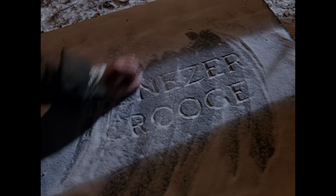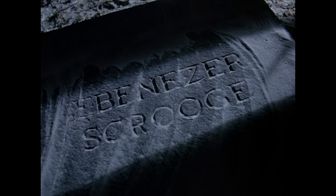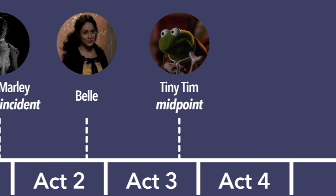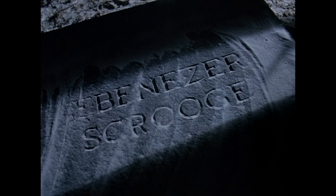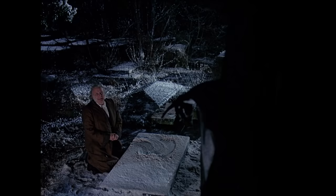Scrooge at first thinks that the ghost is using people's reactions to some other man's death as a kind of warning. But then the ghost takes him to see the grave of the dead man, and Scrooge realizes the truth. In previous acts, other characters confront him with his flaw. But in Act 4, at the crisis point, Scrooge is confronted by his own grave. The ghost has shown him a future in which he dies alone, with no one to mourn his passing.